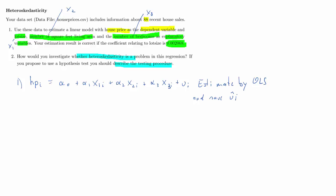In the second step, we run an auxiliary regression that has as its dependent variable the squared values of the estimated residuals. As explanatory variables on the right-hand side, we use anything potentially useful to explain variation in our proxy for error variance — specifically, all the explanatory variables in levels only, with no squared terms. We also have a new error term. This procedure is called the Breusch-Pagan test.